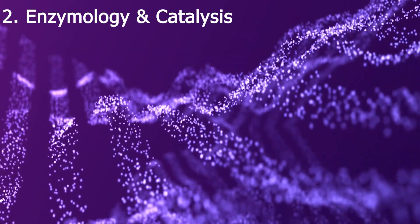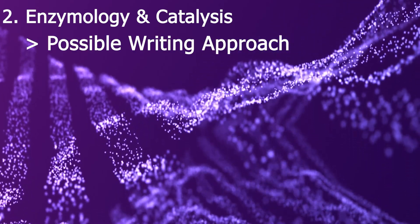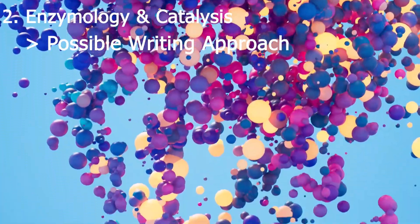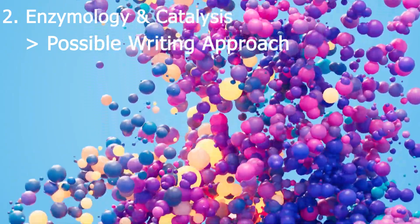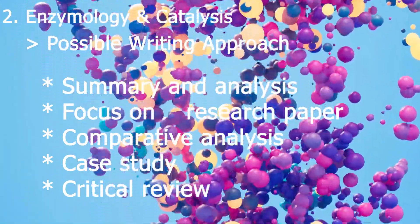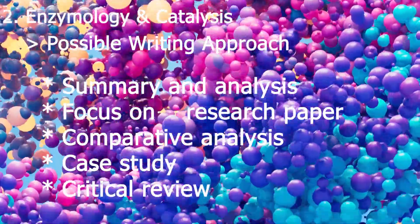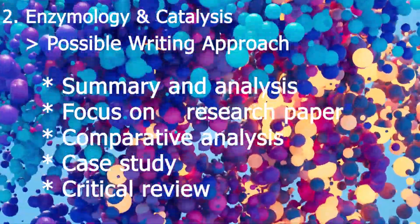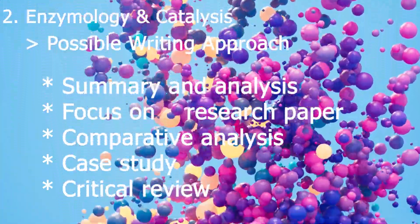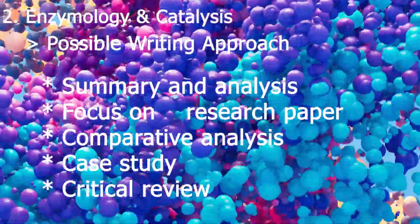The next topic to choose from is Enzymology and Catalysis. As an undergraduate writing on this topic for a biochemistry seminar, the specific expectations will depend on your supervisor's instructions and the overall goal of the assignment. One possible writing approach is a summary and analysis: provide a comprehensive overview of key concepts in Enzymology and Catalysis, including enzyme structure, enzyme function, mechanisms of action, and factors affecting enzyme activity. Analyze the importance of these processes in living organisms and their applications in medicine, biotechnology, and industry.